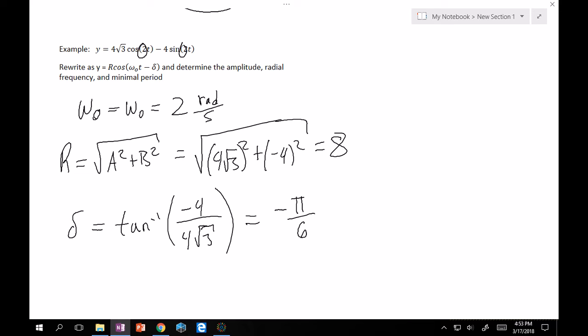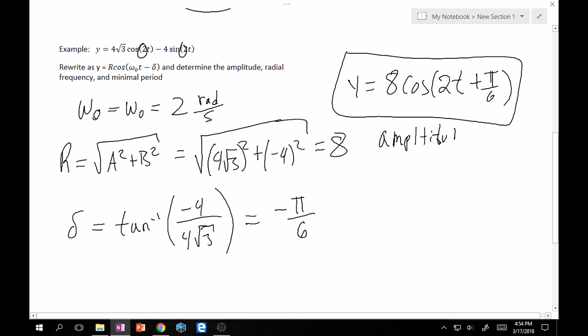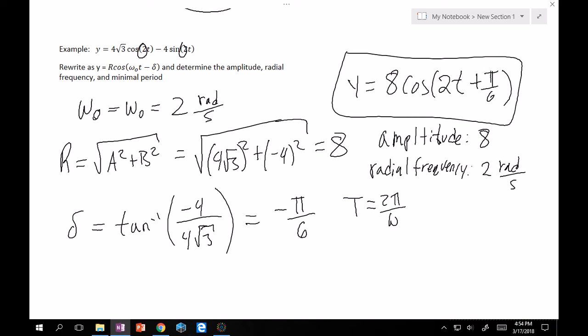So now we want to rewrite this, and that's pretty easy to do. We have everything. So y = 8 cos(2t - (-π/6)) = 8 cos(2t + π/6). Be careful about that. And there we go. That's the first part. And then we want to determine the amplitude. So the amplitude is 8. Radial frequency is 2 radians per second. And then the minimal period, so T = 2π/ω₀ = 2π/2 = π seconds. And there we go. Simple as that.